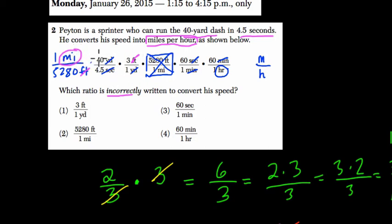Now if we actually do the calculation, you have 60 times 60 times 40 in the numerator over 5,280, and then you would reduce that to get his speed in miles per hour.